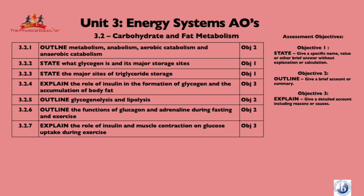We're going to start as we normally do with the assessment objectives. It's a short unit, not many keywords to grasp. State, outline, and explain are the only three key terms used within this section, with only two of the specification points requiring an explanation. For the other areas, it's just a case of understanding the key terms and being able to compare them to other key terms within this unit.